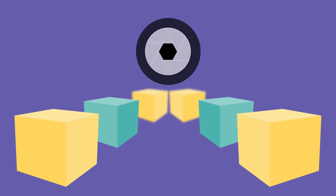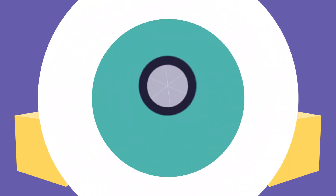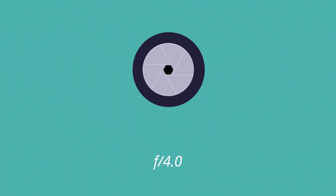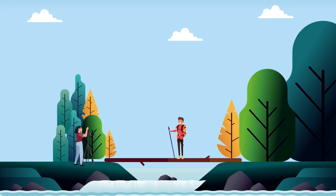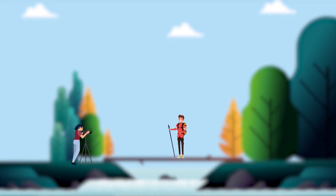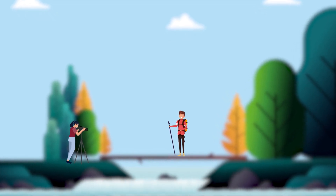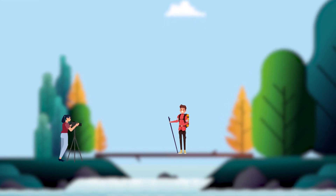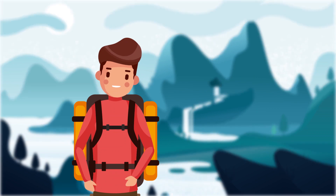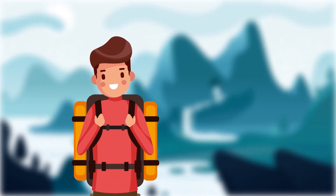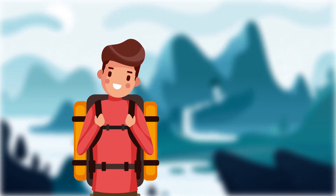Your depth of field will vary as you adjust your aperture settings. Using a wide aperture, that is a small f-stop value, decreases your depth of field. Photographers refer to this as a shallow depth of field, meaning that less area of the image will be in focus. You'll often see this used in portrait photography, where photographers keep their subjects in sharp focus while leaving the background soft and hazy.